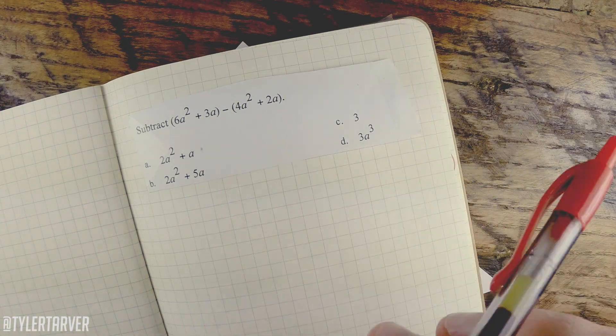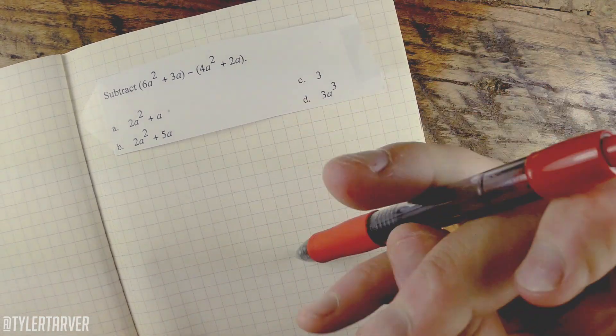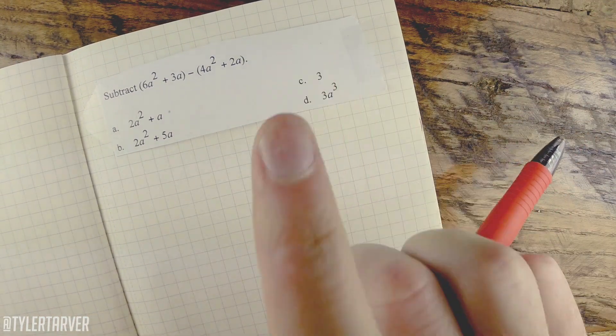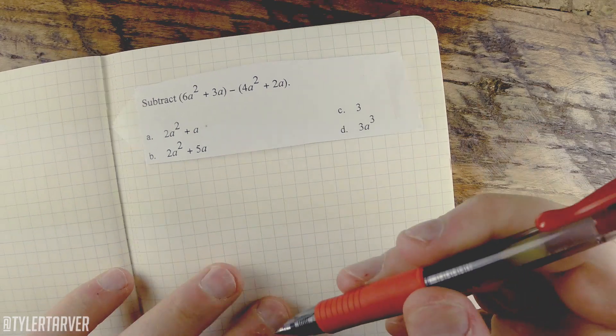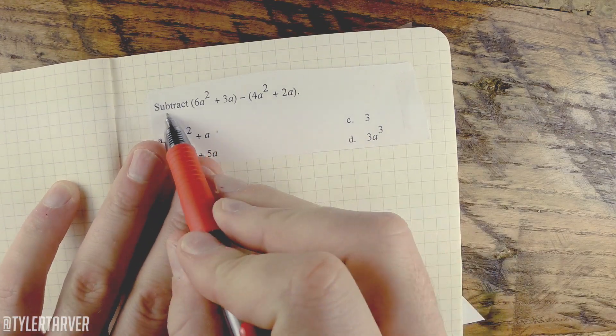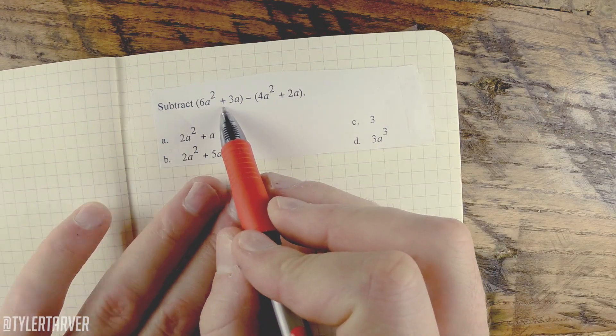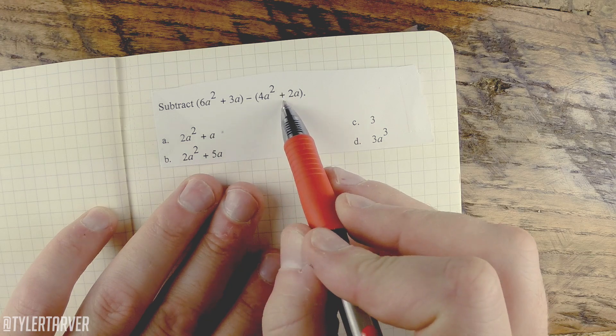Hello ladies and gentlemen, it's me Bilbo Baggins from tarveracademy.com and I'm going to teach you how to do some math. So let's look at today's problem of the day. Subtract (6a² + 3a) minus (4a² + 2a).